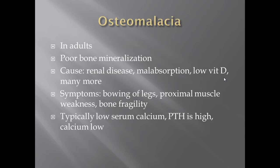Let's start with osteomalacia. It's going to be a state of poor bone mineralization. Your bone is made out of calcium, phosphate, collagen, and other components, and you're going to have low calcium levels within the bone. Some causes include renal disease — more likely a long-standing chronic renal disease — malabsorption, low vitamin D intake, and many others. Symptoms include bowing of legs, proximal muscle weakness, and bone fragility.